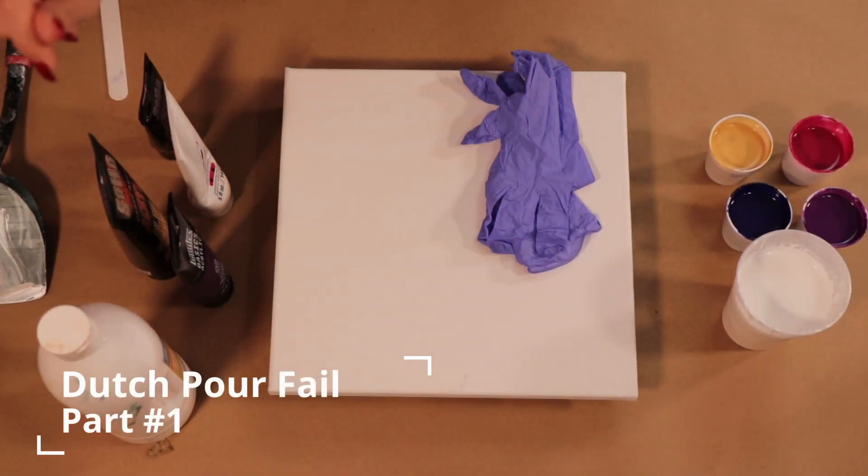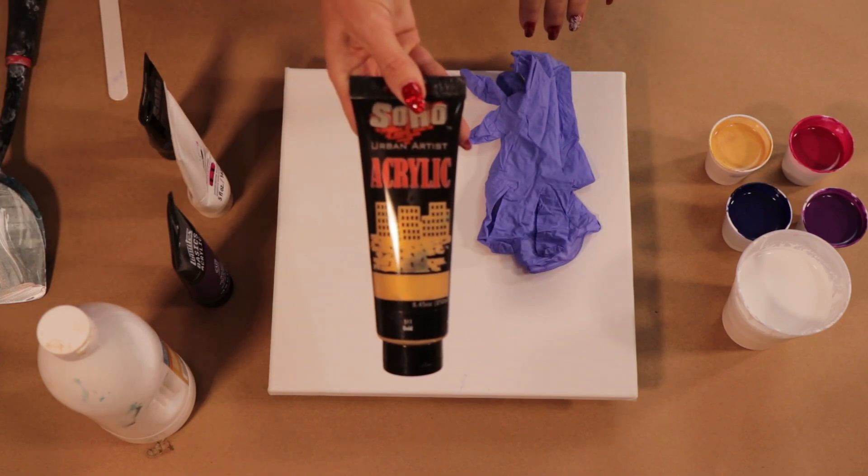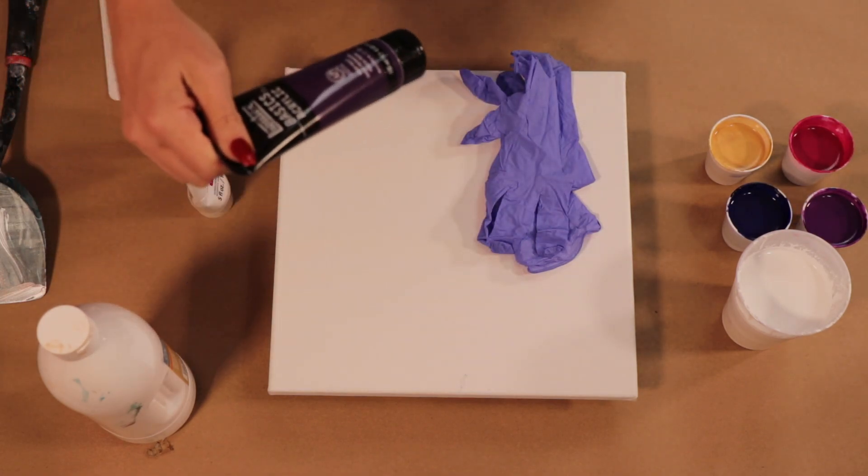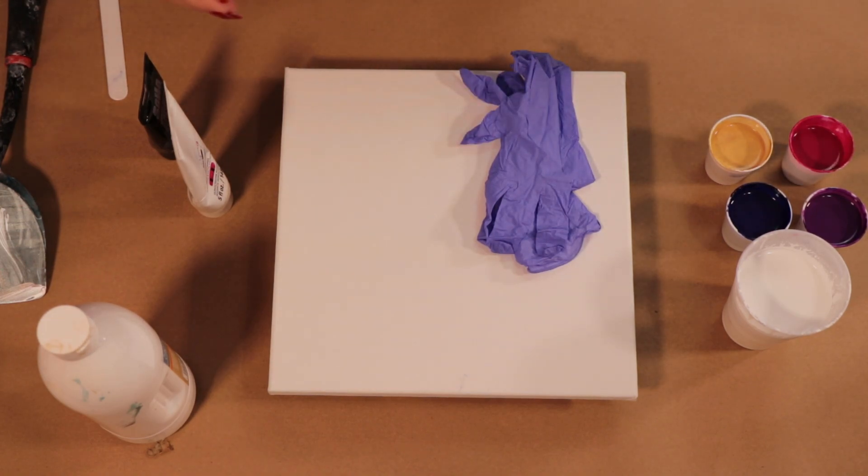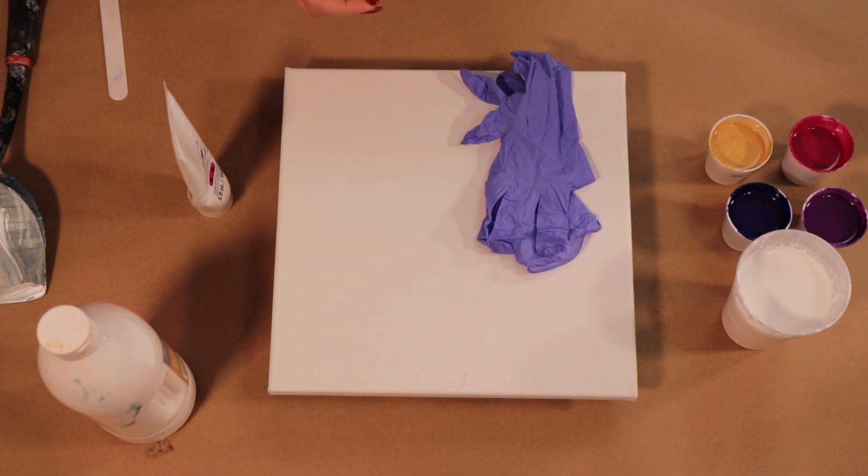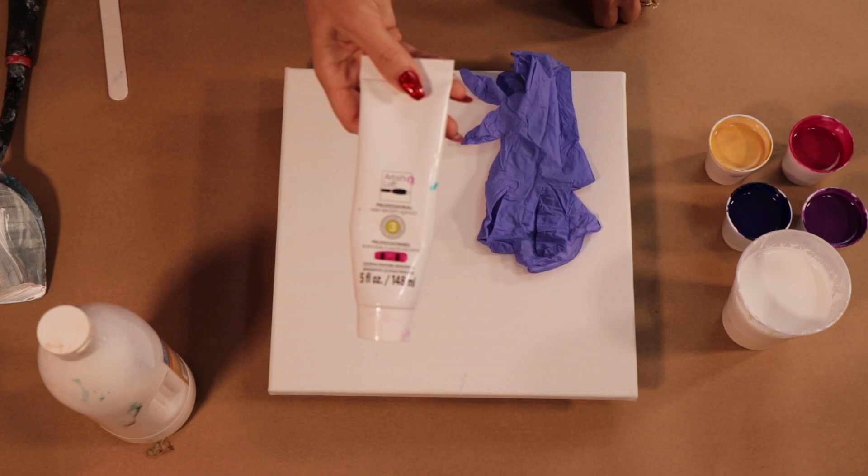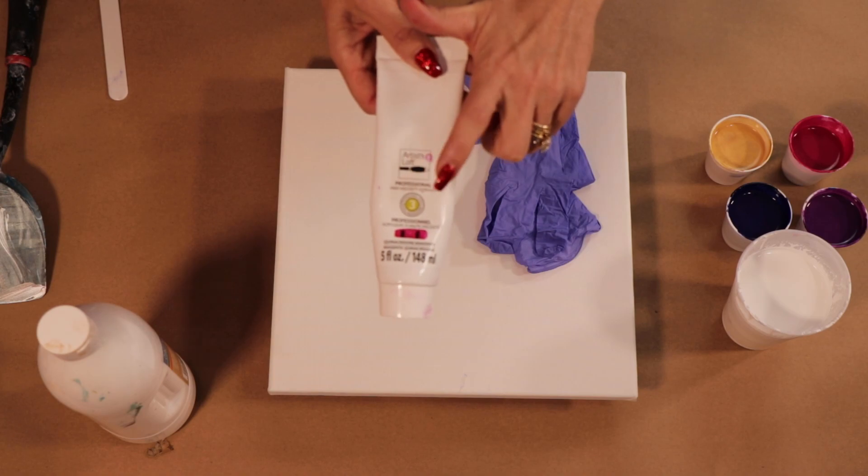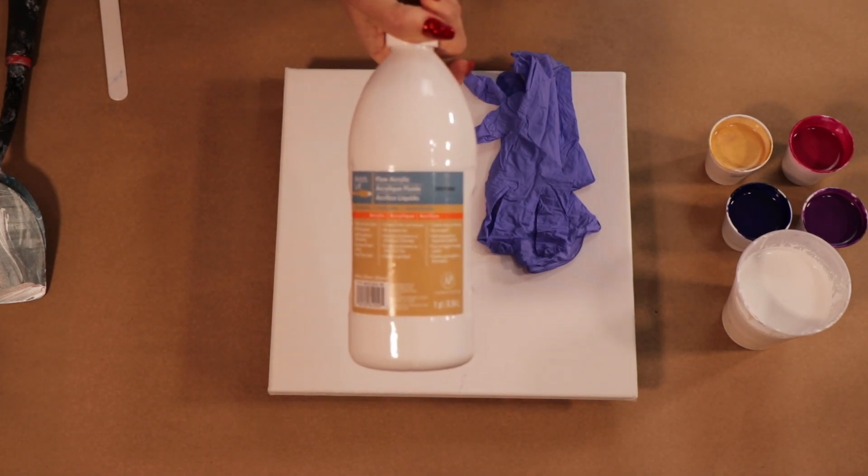Okay guys, so I'm just gonna start off with the colors that I'm using today. The first one that I've got is from Soho and it is gold. The second one is from Liquitex Basics and it is Prism Violet. And then I've got another one from Soho and that is Prussian Blue. And then I have another one from Artist's Loft and it is Quinacridone Magenta, this is the level 3 that I'm using. And then for my white I'm just using Artist's Loft Flow Acrylic.